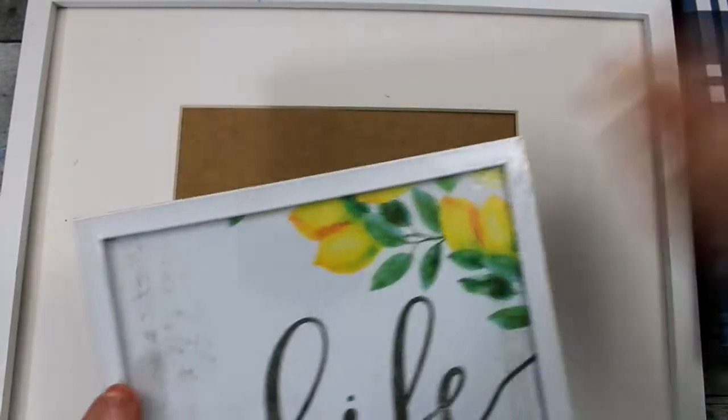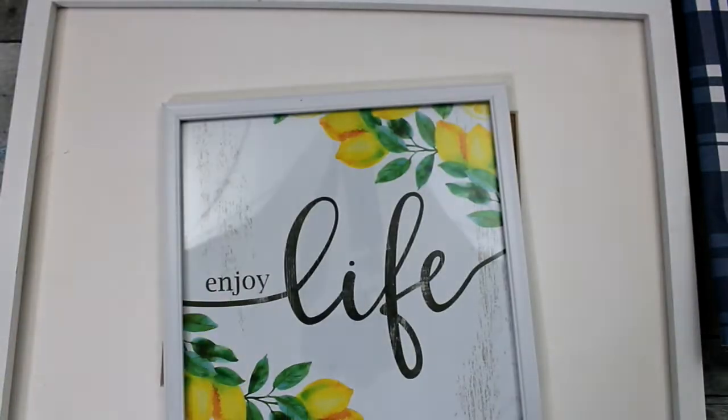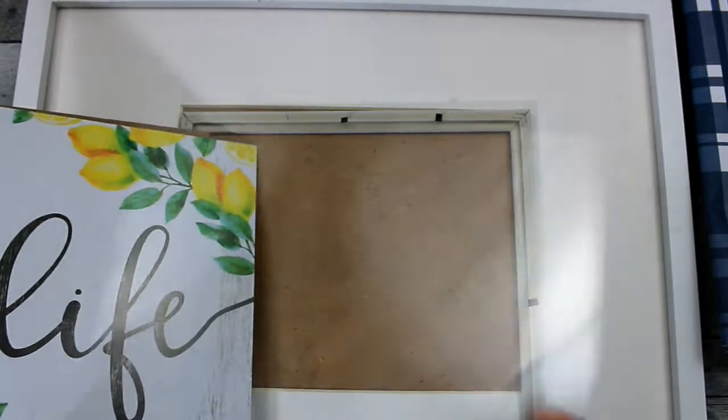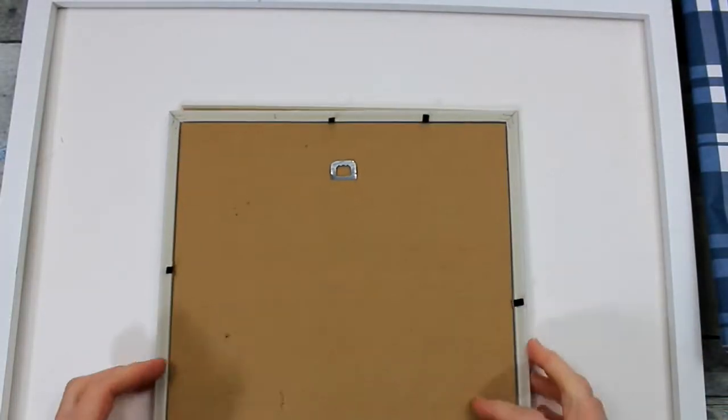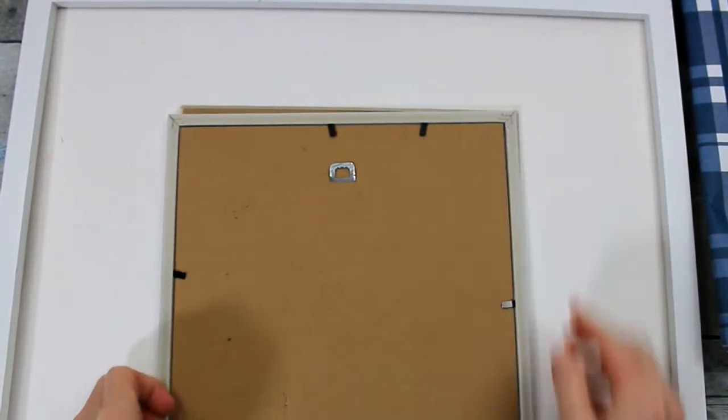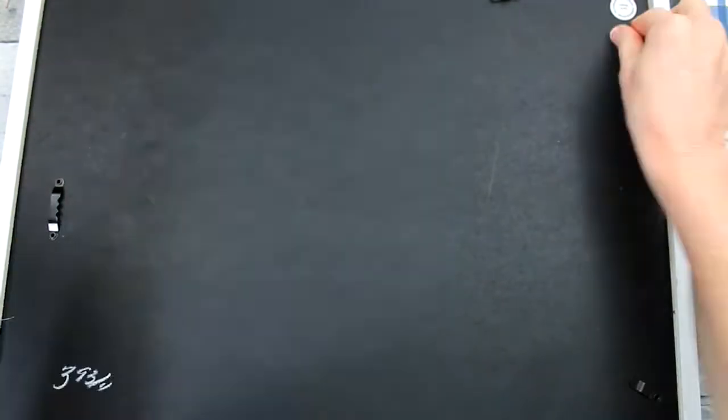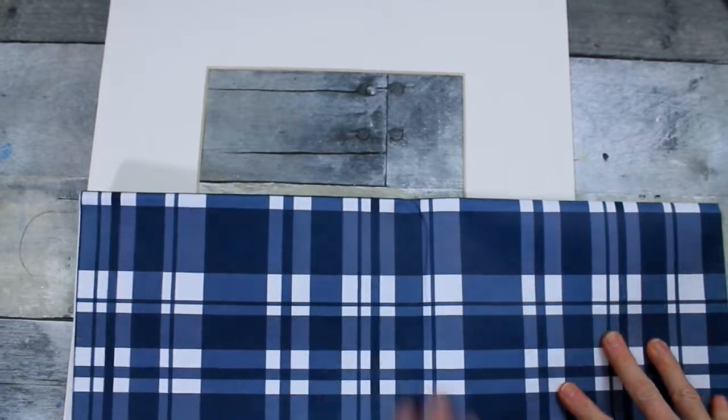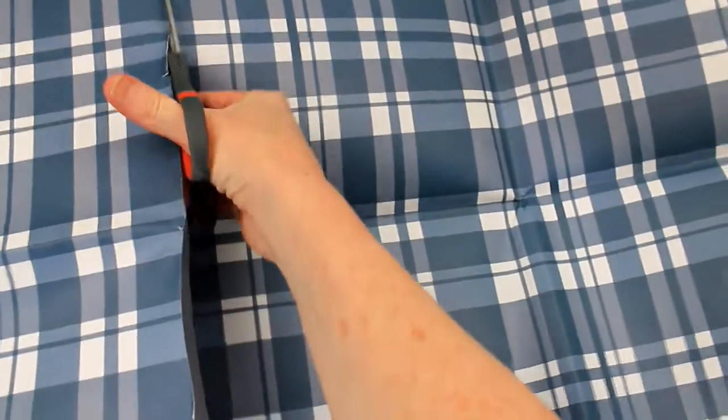Now we're going to take the plastic off of our pretty little wall decor here. And I'm going to remove the glass. You can certainly leave yours in and clean it up if you would like. But I want this to be lightweight and I have children that run through the house, so this is going to hang up nicely for me without breaking if it falls. We're going to take out the mat and cover the mat with this paper.